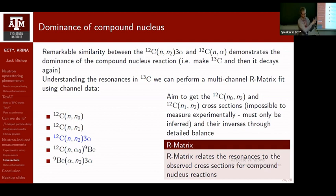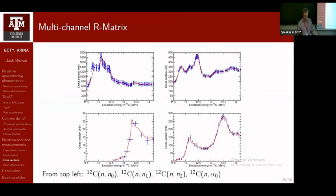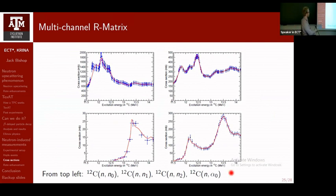We performed a multi-channel R-matrix fit using several datasets simultaneously: elastic scattering, scattering to the first excited state, our Hoyle state data in blue, the (n,α₀) cross-section, and a beryllium-9(α,n) dataset suggested by collaborators. The R-matrix fit gives reasonable agreement across all channels. Notably, leaving out the beryllium-9(α,n) data from the fit and then predicting it gave nearly perfect agreement immediately, confirming the quality of the R-matrix description.